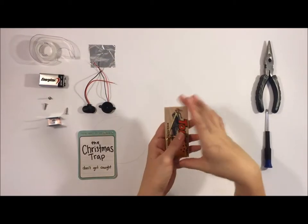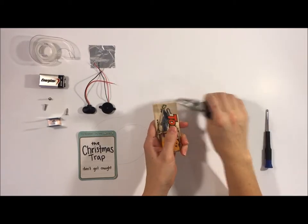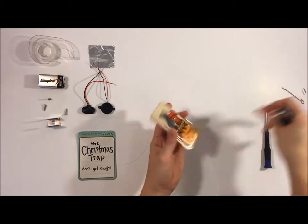So you're gonna start by taking the mousetrap and you're gonna remove the extra parts that you don't need—this lever here and then the bait.